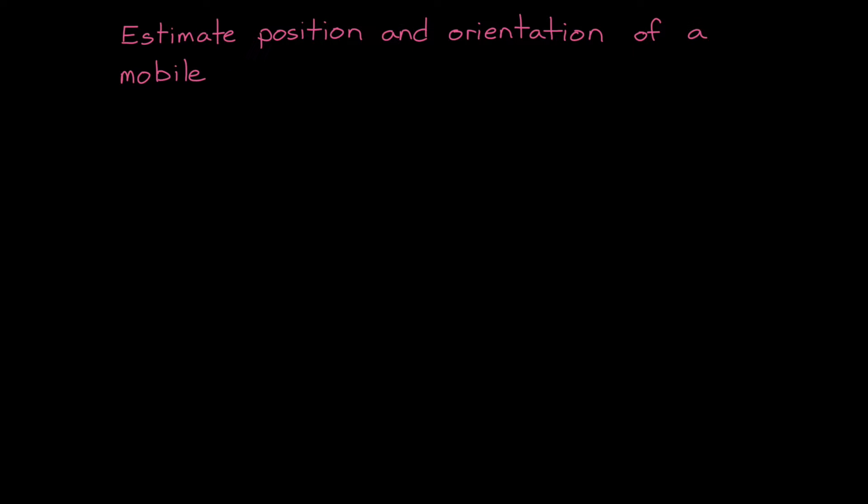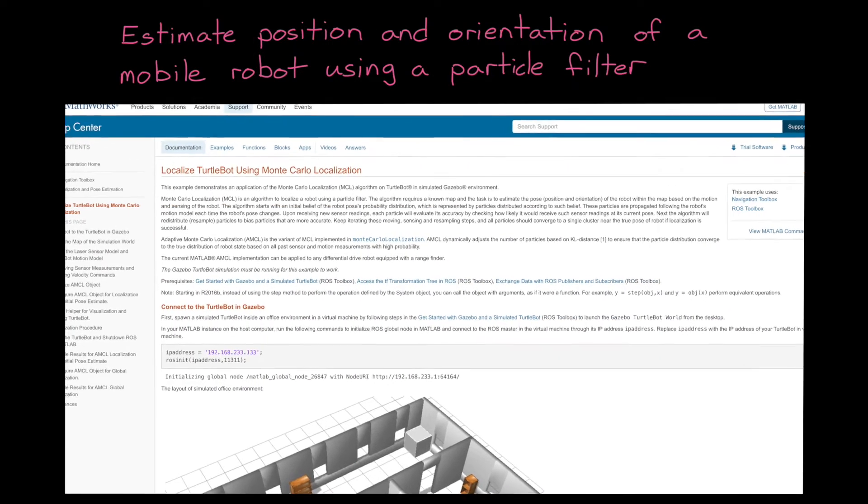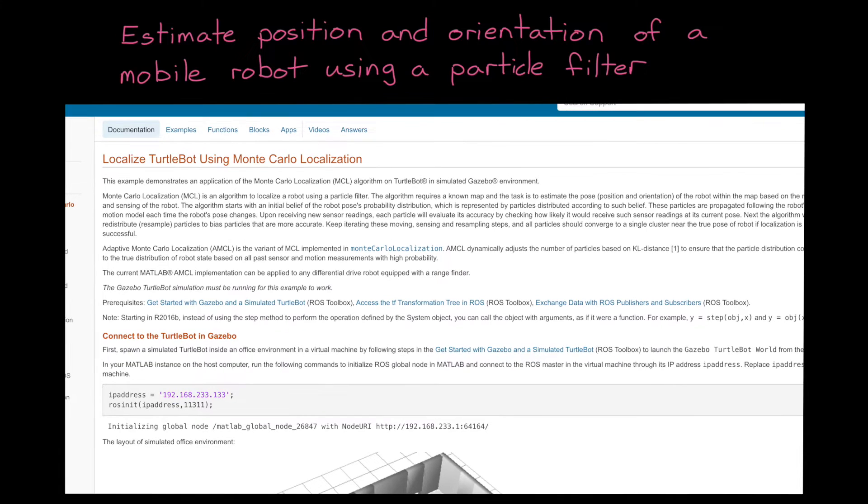In the first video, we talked about what autonomous navigation is and how it can be applied to different types of autonomous vehicles. In this video, we're going to look at one part of autonomous navigation and show how you can estimate the position and orientation of a mobile robot using a particle filter. We're going to go through the same localization approach as demonstrated in the MATLAB example, Localize TurtleBot Using Monte Carlo Localization.